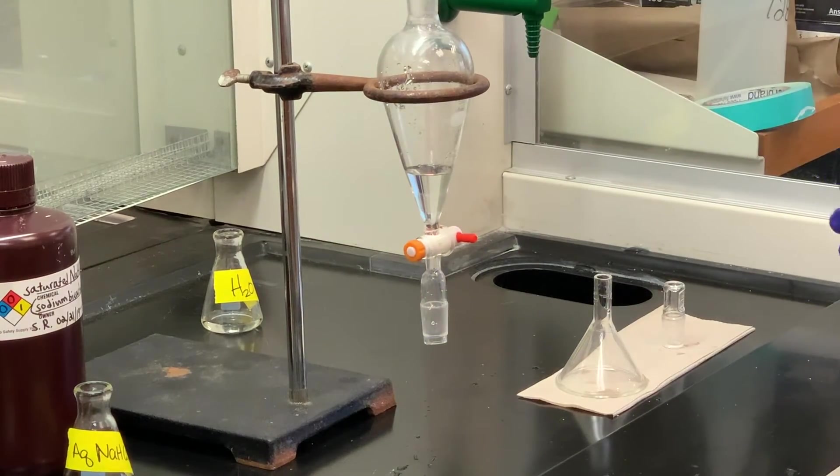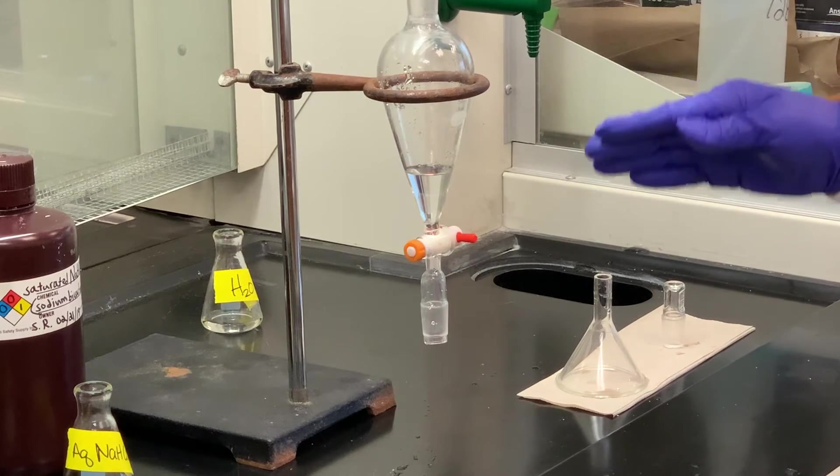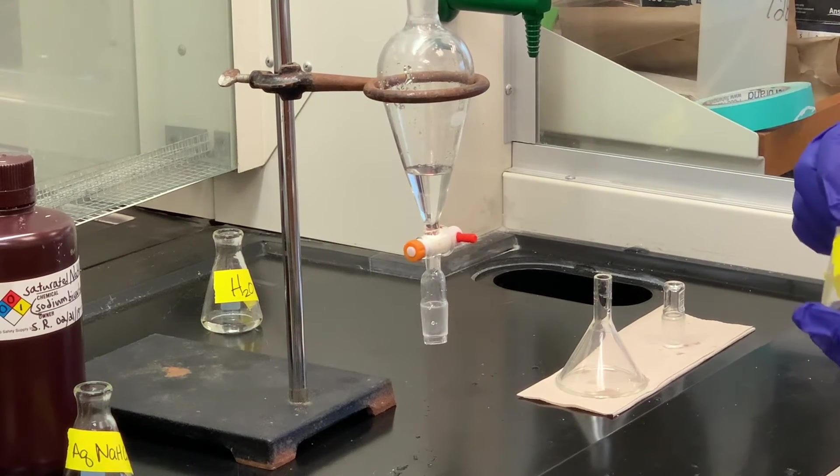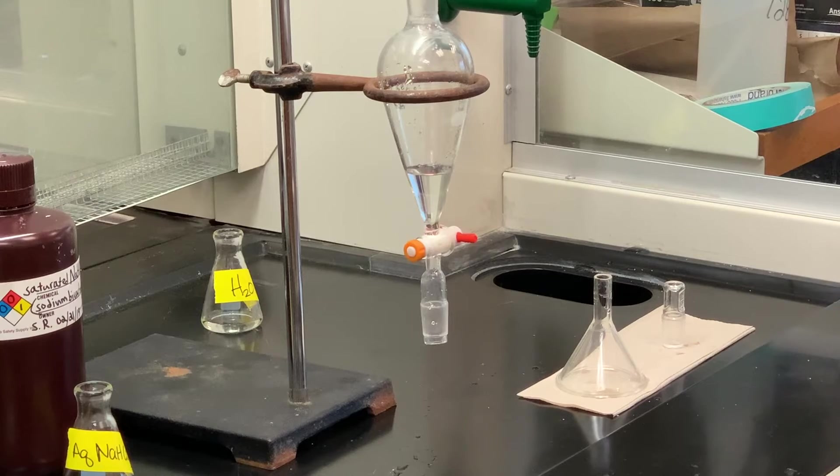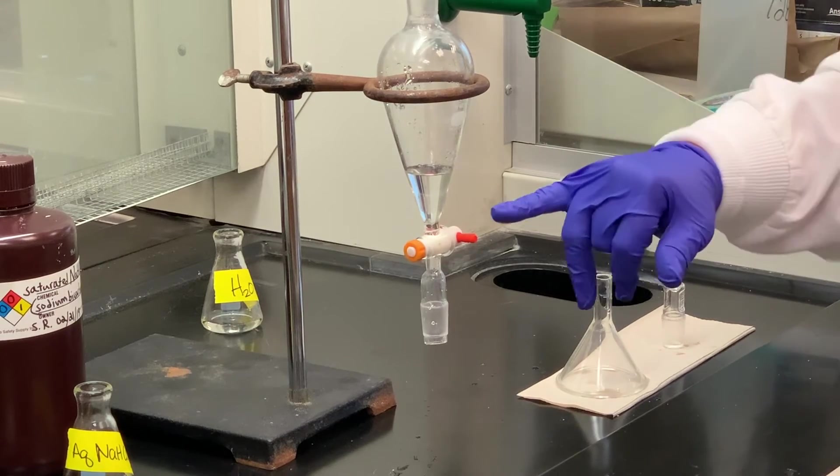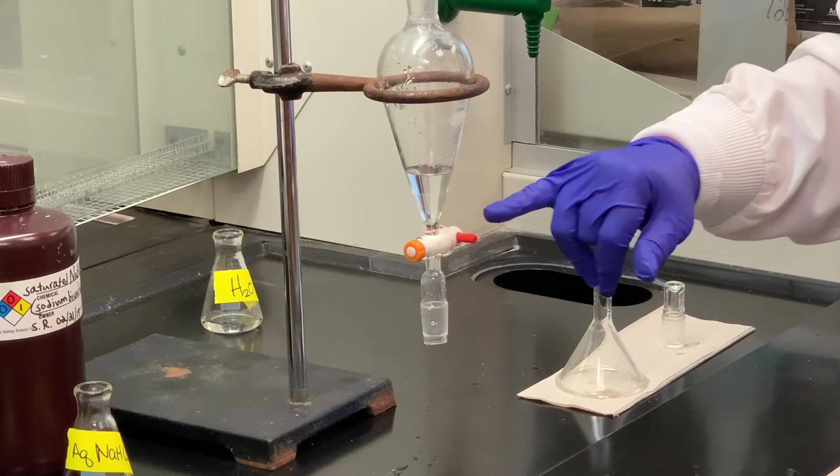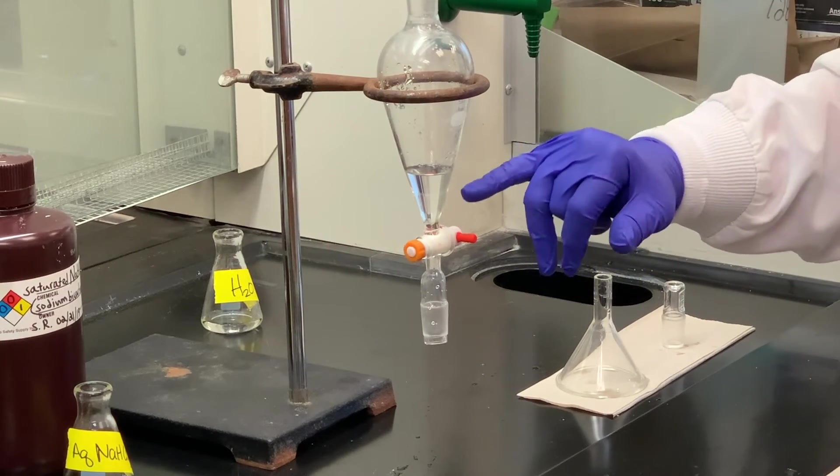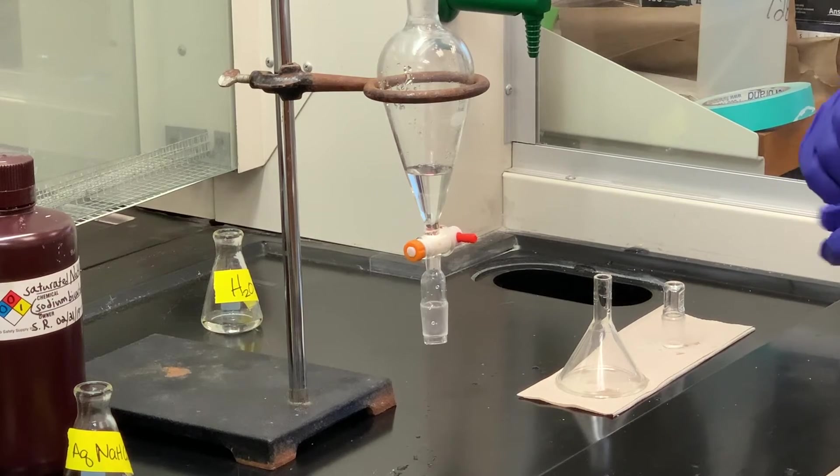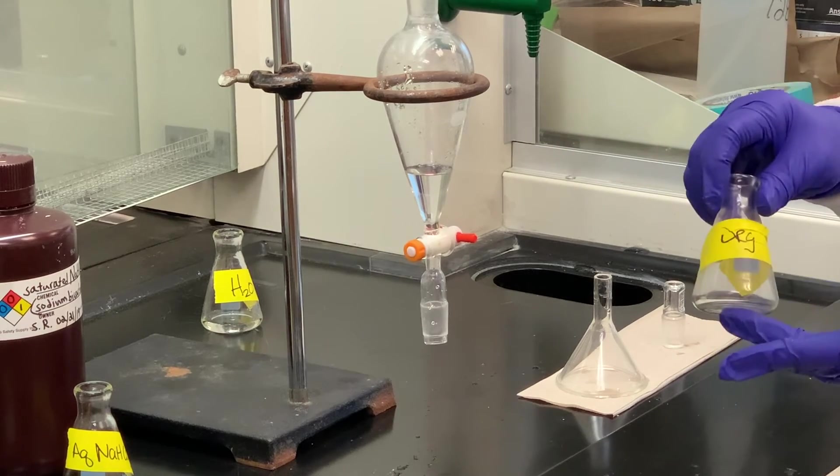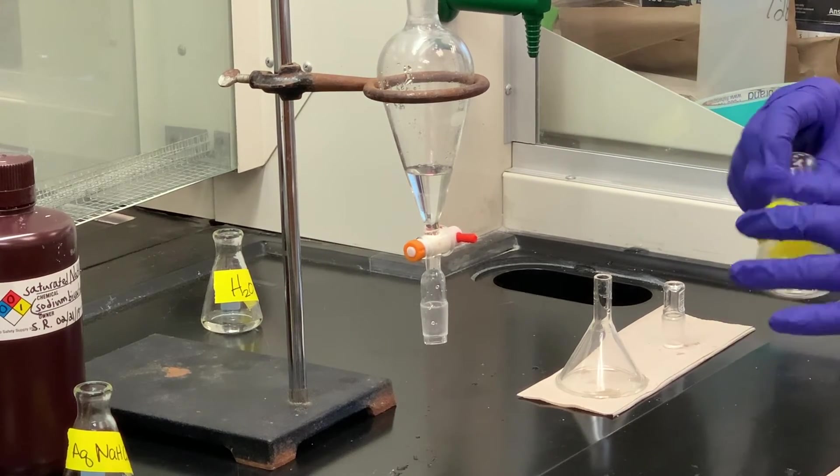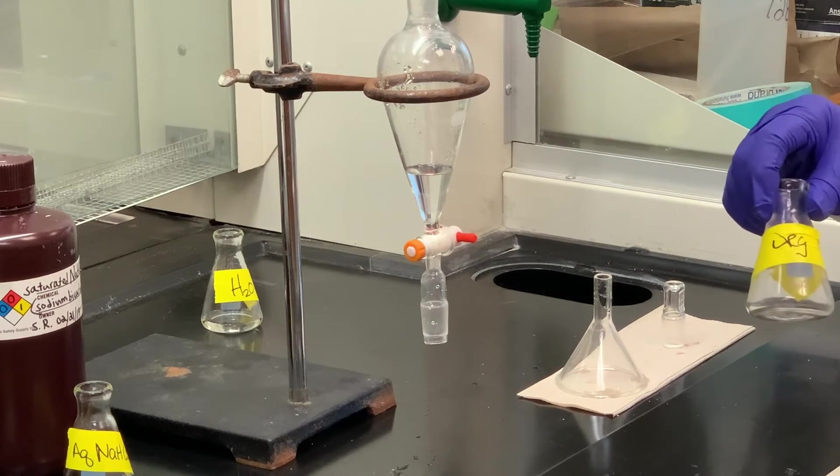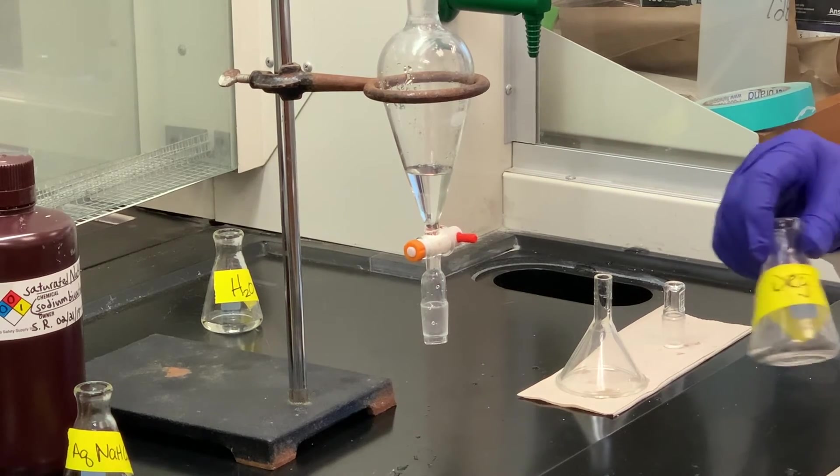Okay, now what we want to do is drain off the organic layer into the organic flask. And what I'm going to do, because there is a possibility, depending on how good I was at separating the layers, it's possible that there could be some water that's trapped in there. So we're going to put the organic layer into the organic flask. We're going to add some of the drying agent. Let it sit about 10-15 minutes, and then we'll remove the drying agent.